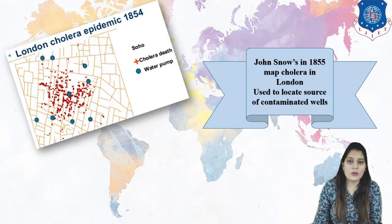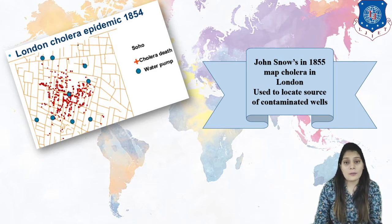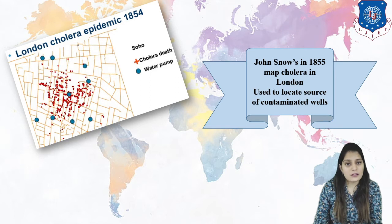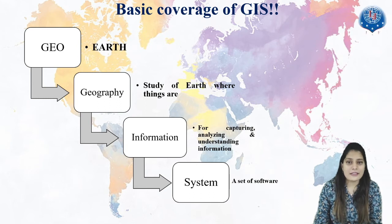Just by doing the local action, they can have a global vision out of it. On just paper, he pointed out the well locations, where water is distributed, the drainage network, and found out where the water was most contaminated. This is how geographical location-based services have helped us. Moving further, let's see what the basic coverage of GIS is. GIS every time means Geographical Information System.